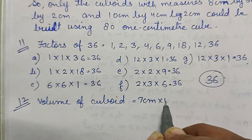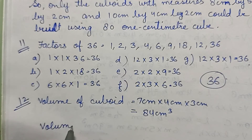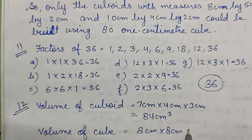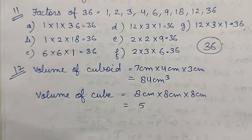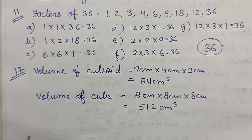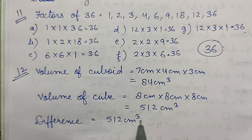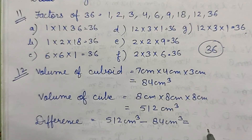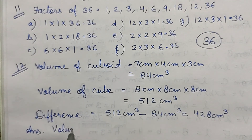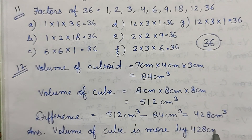Volume of cuboid: 7 cm into 4 cm into 3 cm equals 84 centimeter cube. Volume of cube: 8 cm into 8 cm into 8 cm equals 512 centimeter cube. The cube has greater volume. Difference: 512 − 84 equals 428 centimeter cube. So the answer is: the volume of the cube is more by 428 centimeter cube.